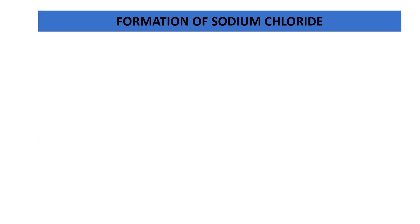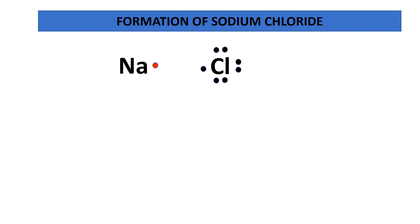Let us discuss the formation of sodium chloride in terms of an electron dot diagram. In class 9 we had orbital diagrams, but in class 10 we draw the electron dot diagram, where electrons are represented with a dot or cross. Here I have a sodium atom with one electron in its outermost shell, representing it with one dot, and a chlorine atom with seven electrons, representing those with seven dots.